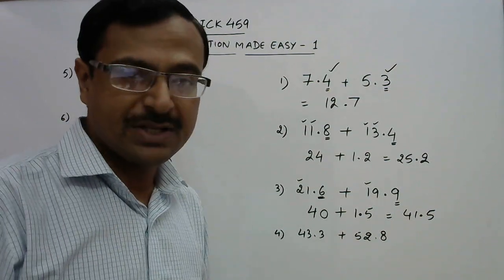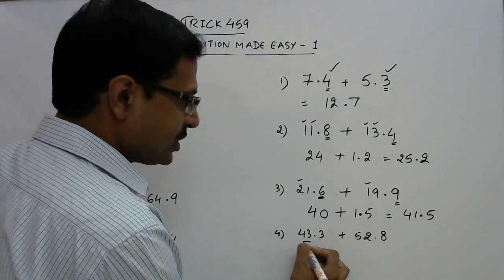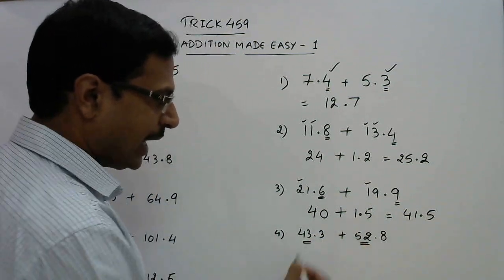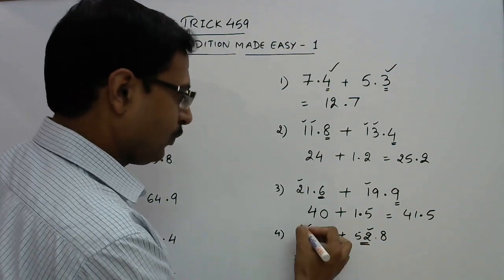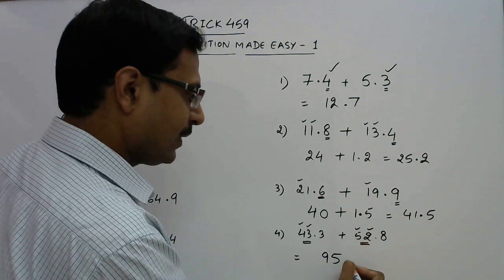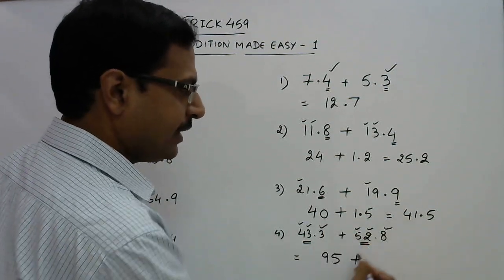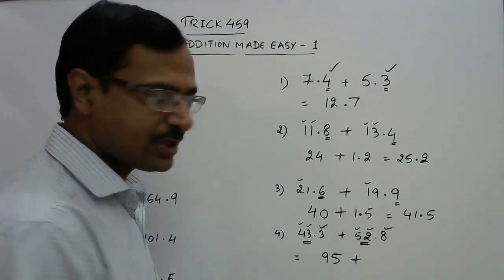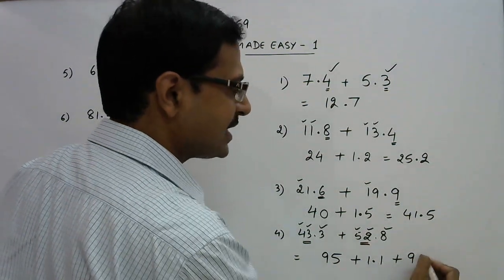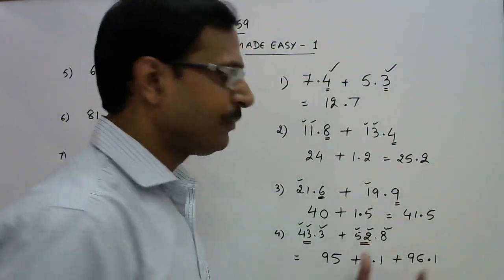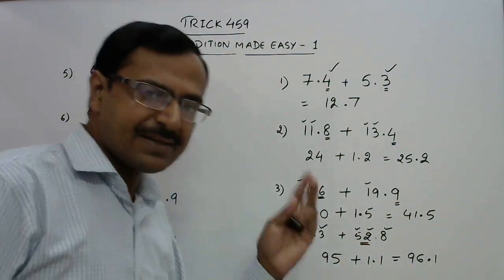Again, we have a two-digit number and two-digit number, so add: 3 + 2 is 5, 4 + 5 is 9. Now we have a 3 here and an 8 here. 8 + 3 is 11, again a two-digit number, so 1.1. 95 + 1 is 96, and point 1 will come as it is. So this is the answer for this question.